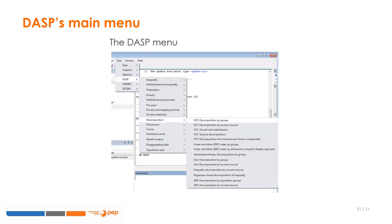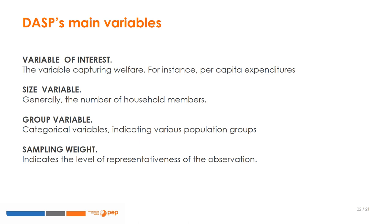The DASP menu makes it possible to quickly access the dialog boxes for all DASP commands, which are grouped by main themes — namely inequality, multidimensional inequality, polarisation, poverty, and so on. In DASP, the main variable of interest is the variable that usually captures living standards. It can represent, for instance, income per capita or expenditures per adult equivalent.